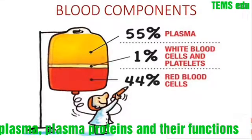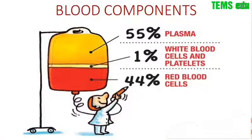55% of the blood component is plasma, 1% is white blood cells and platelets, and 44% is red blood cells. We will discuss here the functions of plasma proteins and the different types of plasma proteins.